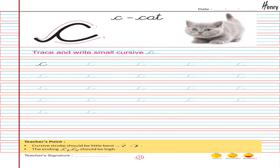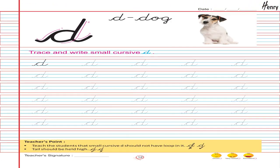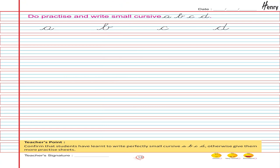C. Cat. Trace and write small cursive C. D. Dog. Trace and write small cursive D. Do practice and write small cursive A, B, C, D.